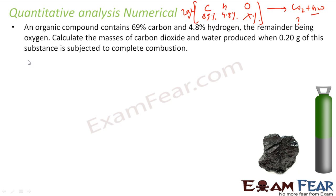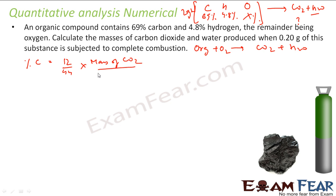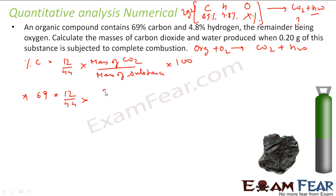You can use the formula directly or use logic. Let's use the formula first. The reaction is: organic compound oxidized gives carbon dioxide and water. Using the formula, percentage carbon = (12/44) × (mass of CO₂) / (mass of substance) × 100. Putting in values: 69 = (12/44) × m / 2 × 100, where m is the mass of CO₂. Solving this, m comes out to be 0.506g.